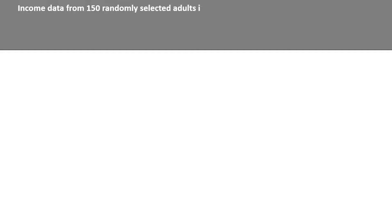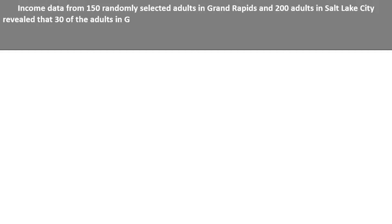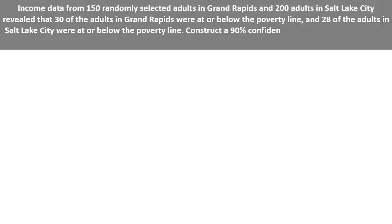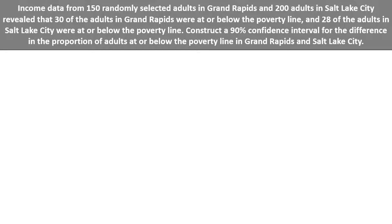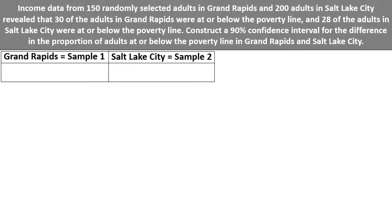Let's take a look at an example. Income data from 150 randomly selected adults in Grand Rapids and 200 adults in Salt Lake City revealed that 30 of the adults in Grand Rapids were at or below the poverty line, and 28 of the adults in Salt Lake City were at or below the poverty line. Construct a 90% confidence interval for the difference in the proportion of adults at or below the poverty line in Grand Rapids and Salt Lake City. The sample sizes are n1 = 150 and n2 = 200, and the number of successes are x1 = 30 and x2 = 28.